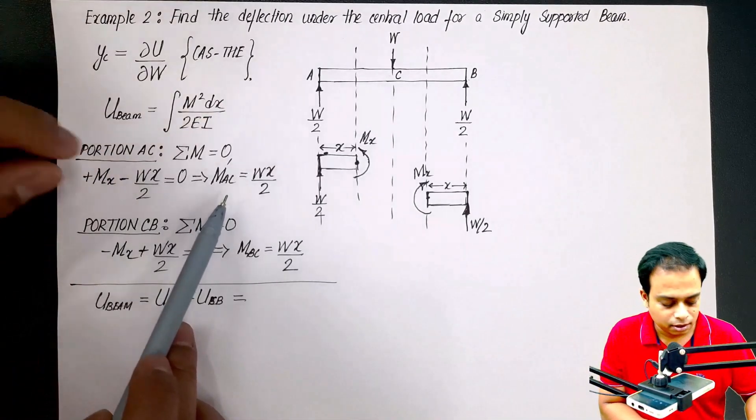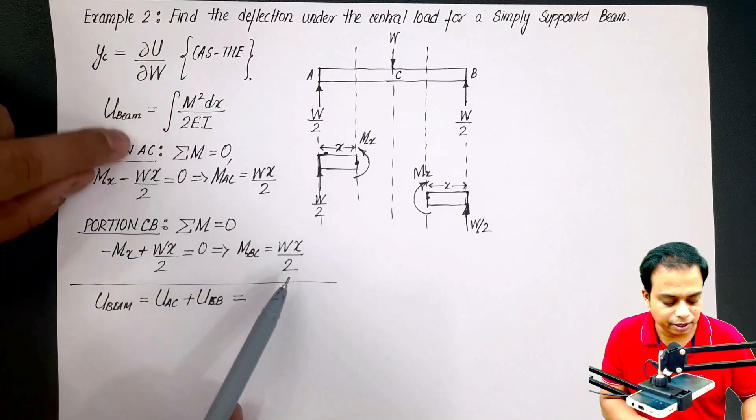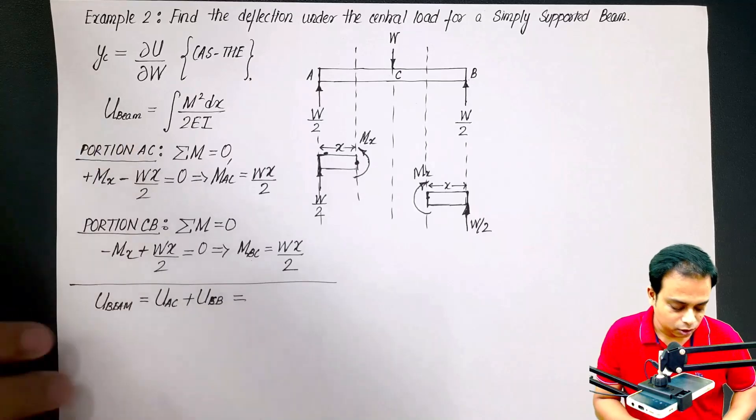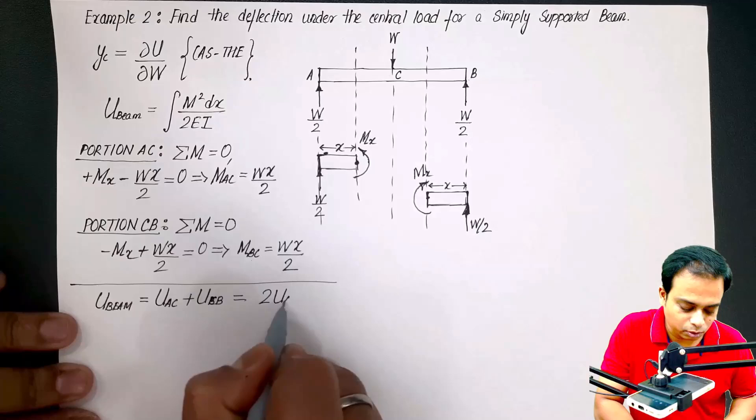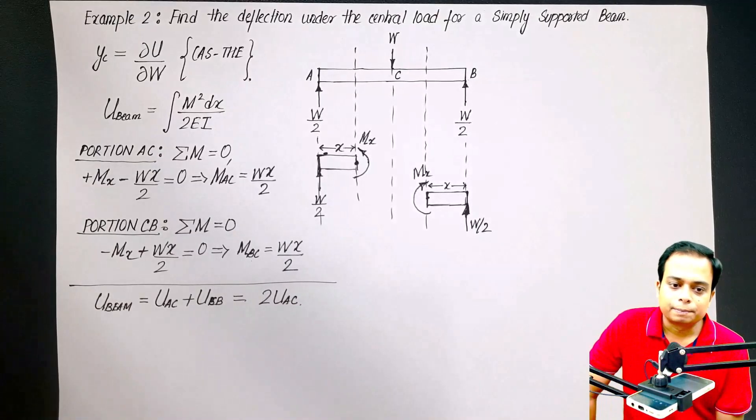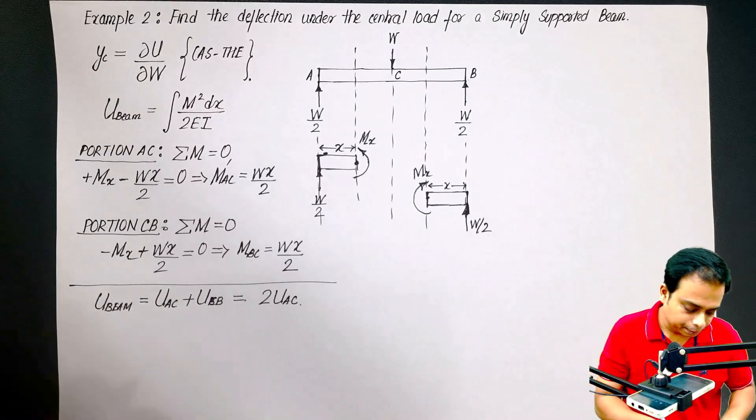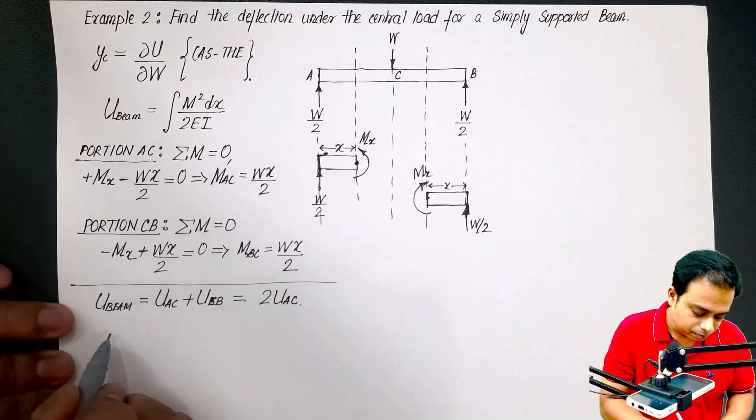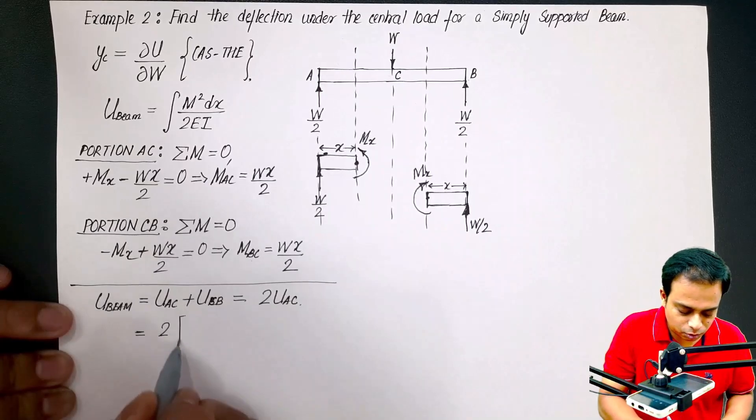This can also be written as, since these two strain energies are going to be equal, because when you put in the value of M_AC over here you get a particular value, and when you put the value of M_BC over here it is same, Wx by 2, so you are going to get the same value, right? So U_AC is equal to U_CB. You can say so we can simply write two times of U_AC. Please note this.